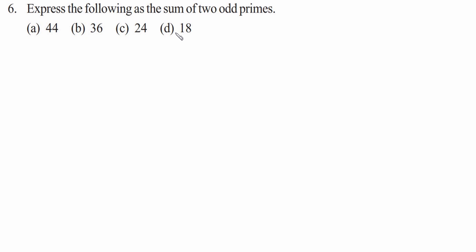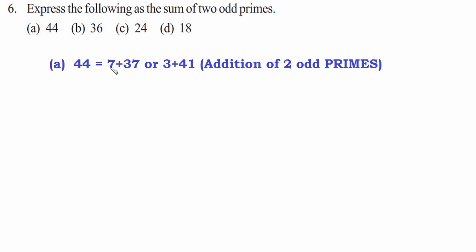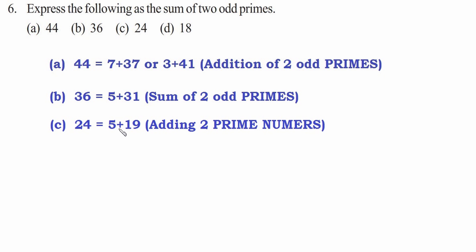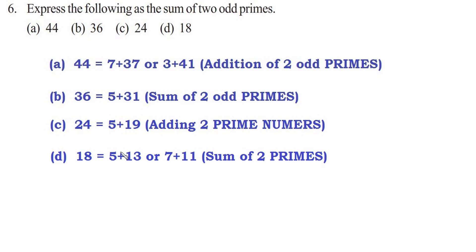Question six: express the following as the sum of two odd primes. 44 can be written as 7 plus 37, or also as 3 plus 41. 36 can be written as 5 plus 31. 24 can be written as 5 plus 19. 18 can be written in two ways: 5 plus 13, and 7 plus 11, all of which are sums of two prime numbers.